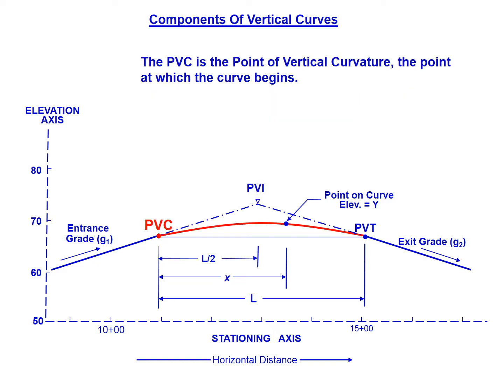We also have the PVC. This is the point where the curve begins, the point of vertical curvature, leaving entrance grade G1 and starting the curve along the vertical curve. Then we'll reach the PVT, the point of vertical tangency. This is the point where the curve ends and we return to the exit grade or G2.